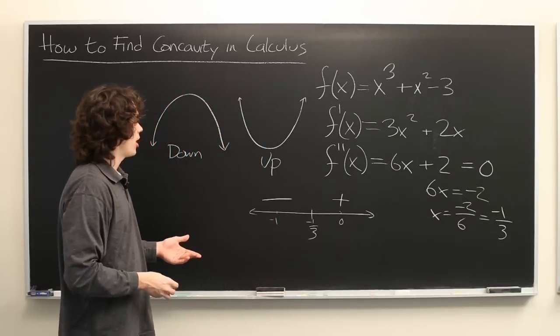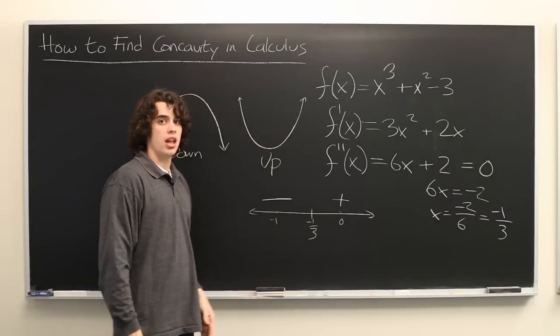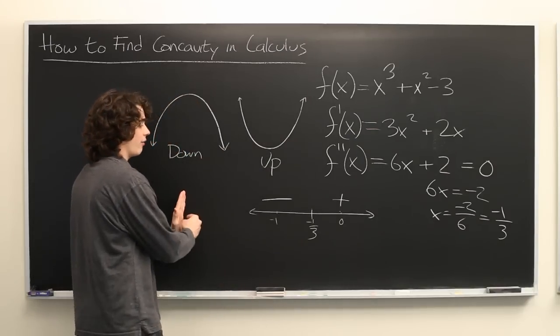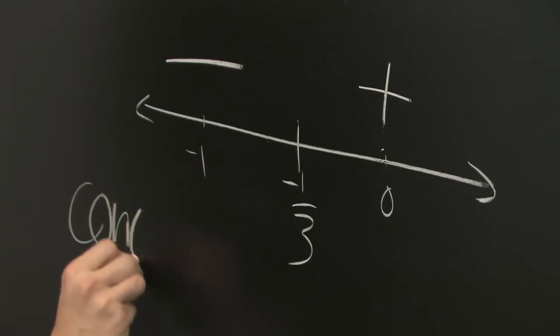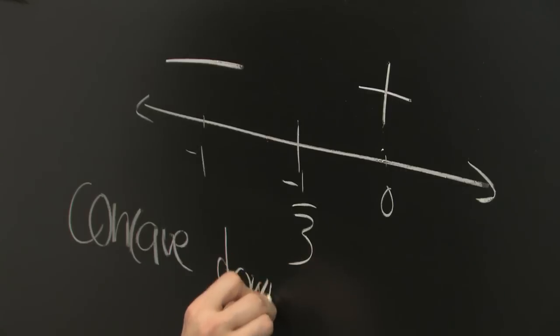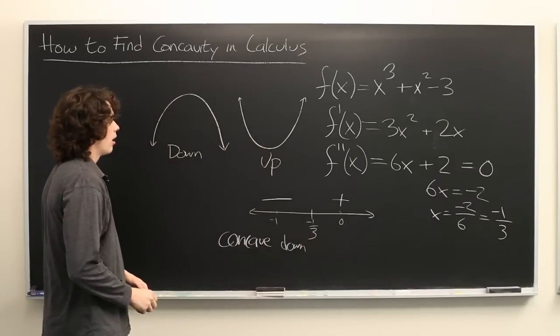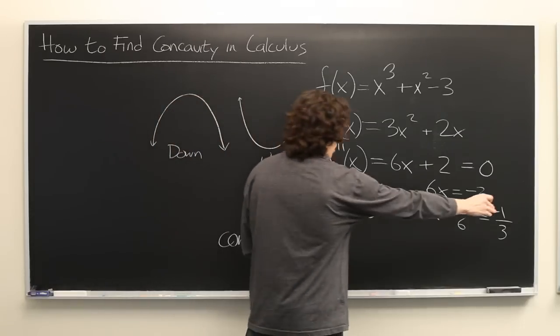So to return to the original problem, what this tells us is that f of x is concave down from negative infinity to negative 1 third, and it is concave up from negative 1 third to positive infinity.